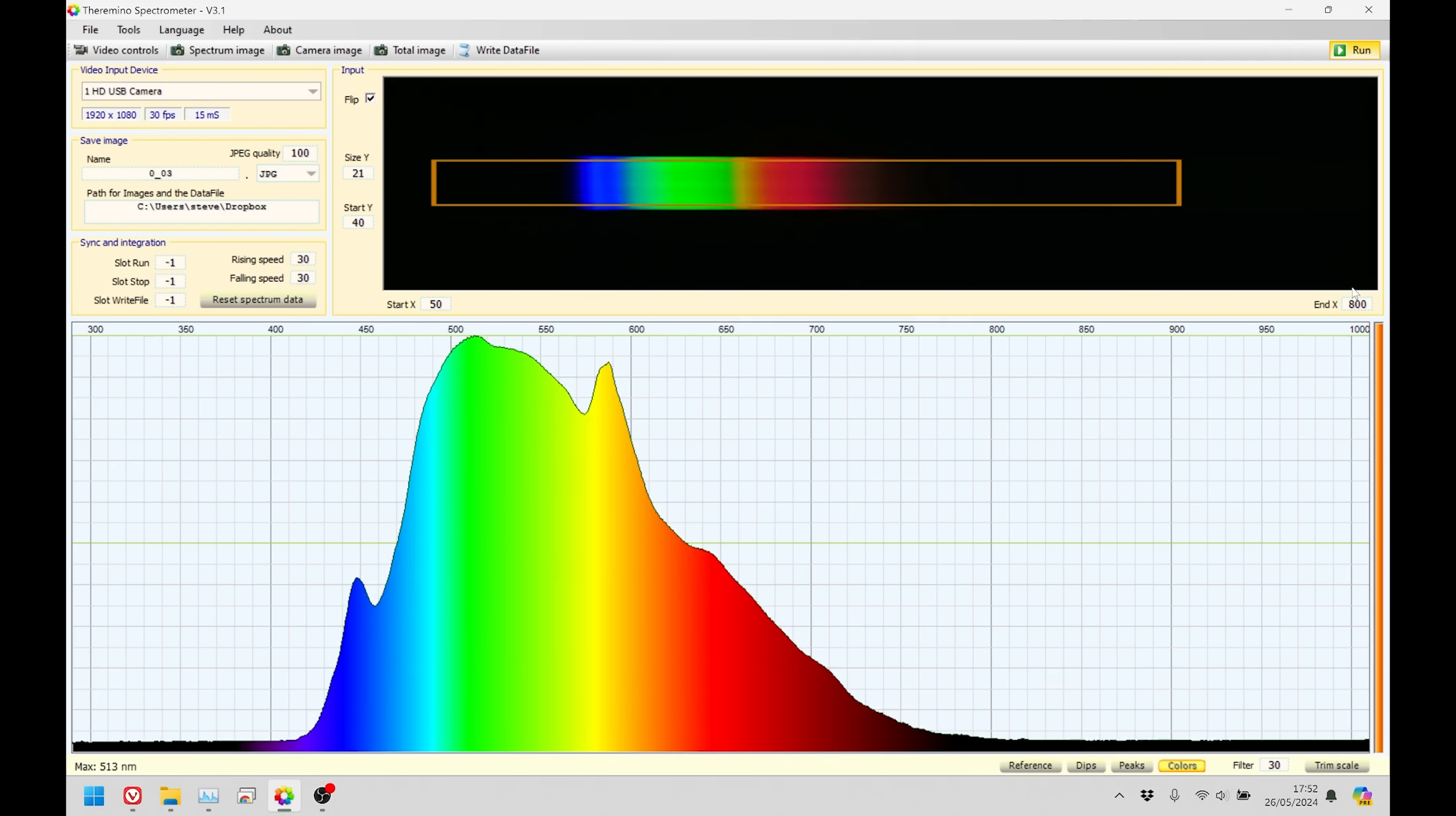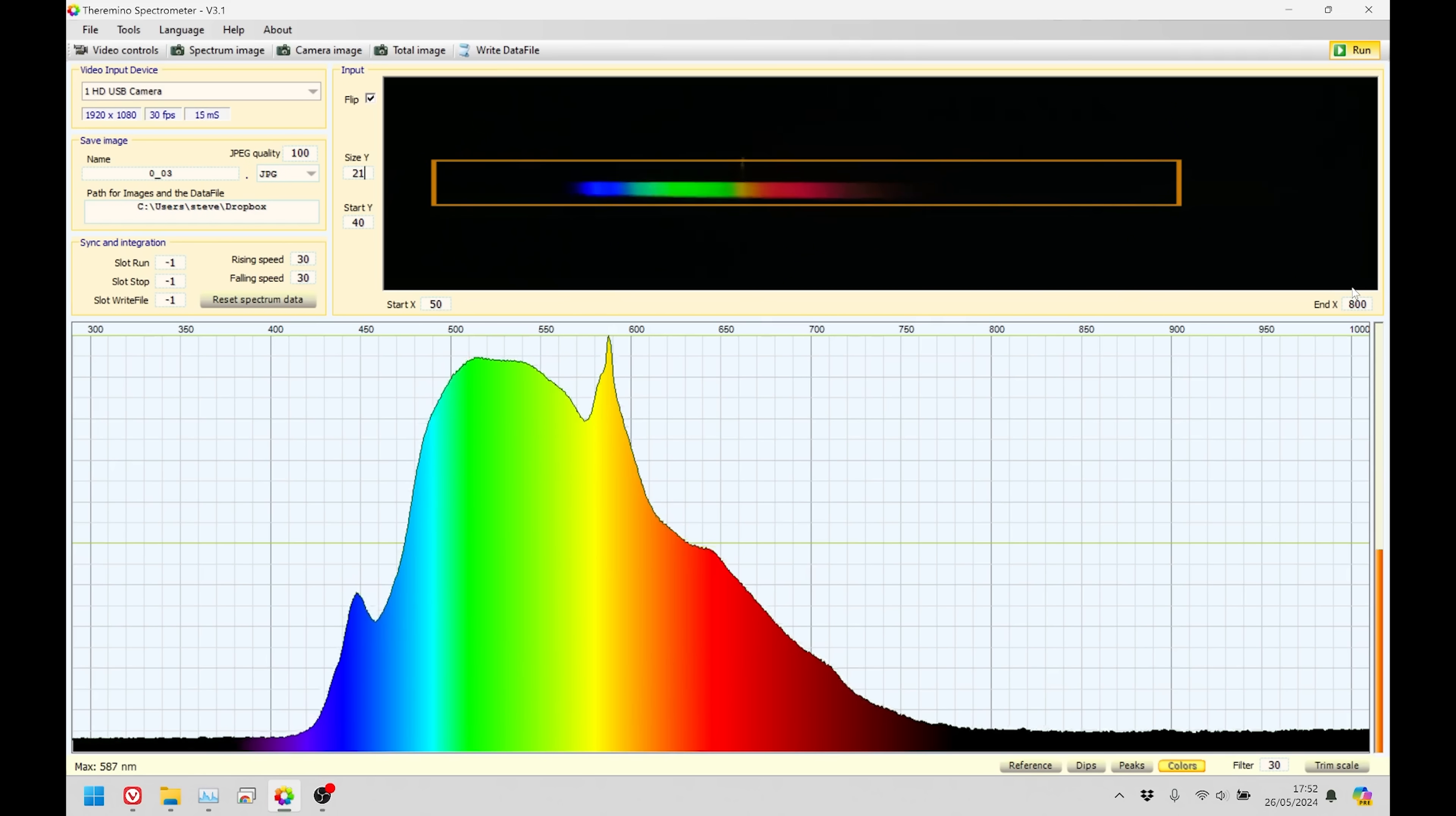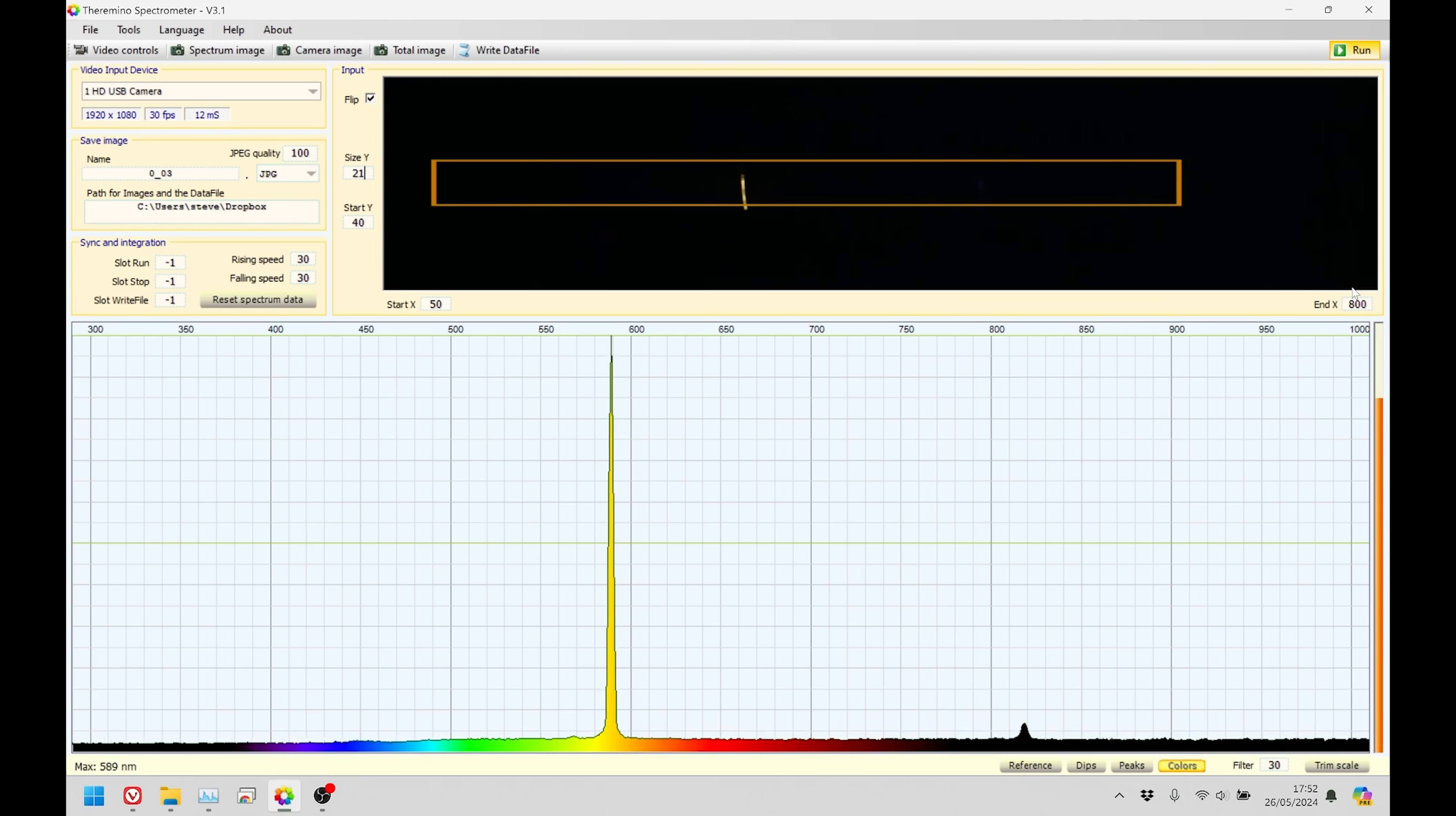But with some special software, I can focus in on just the spectrum part of the image. And from that, it spits out a graph. When I point it at the sodium streetlight, you can see there's the 590 nanometers. This is much more precise than I was doing before, but you still can't see two individual peaks. This device has a resolution of about plus or minus two nanometers of wavelength. But the two sodium peaks are about 0.6 nanometers apart.